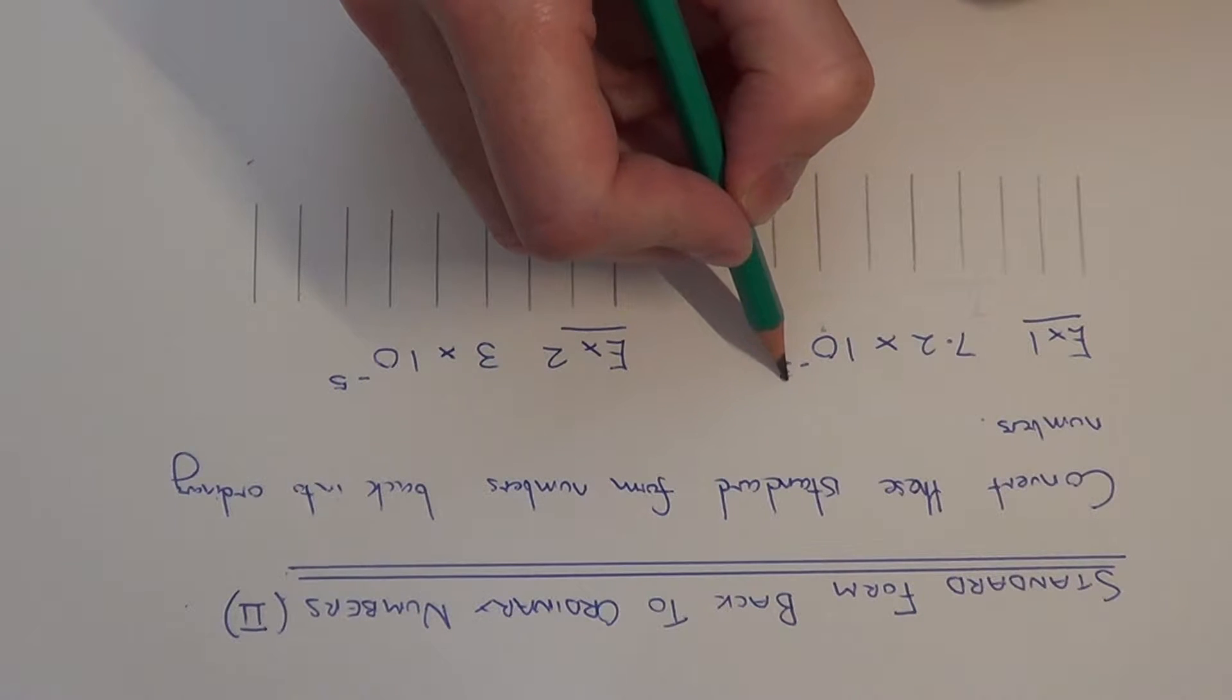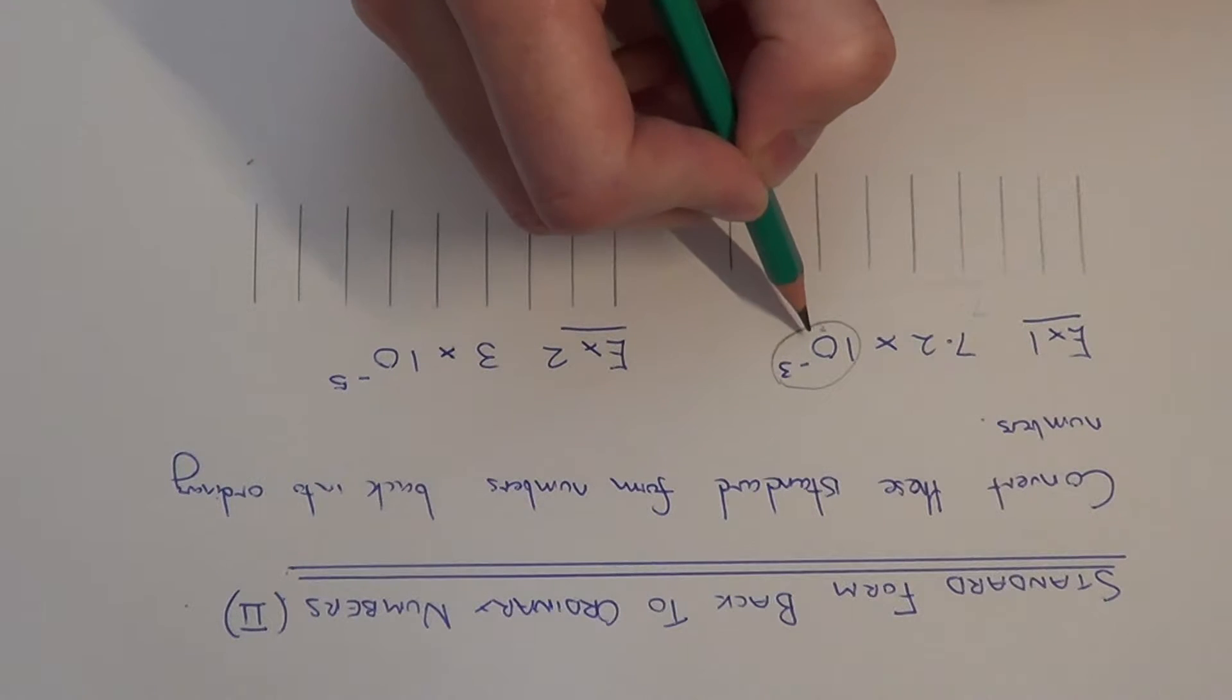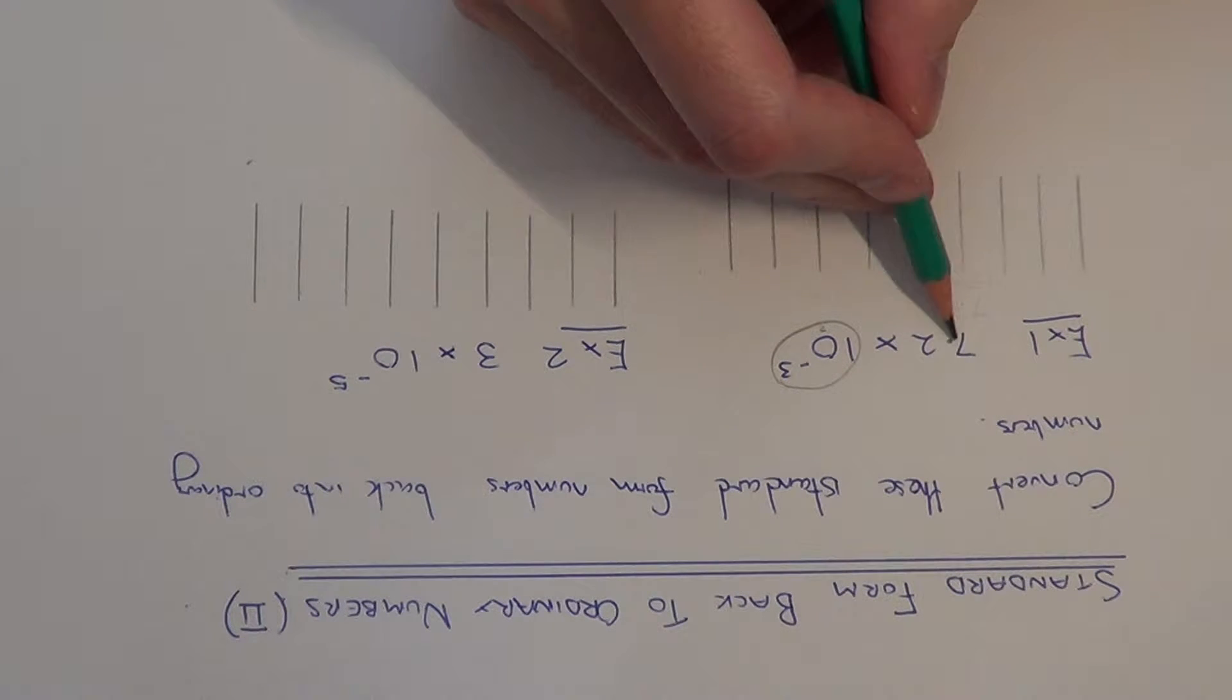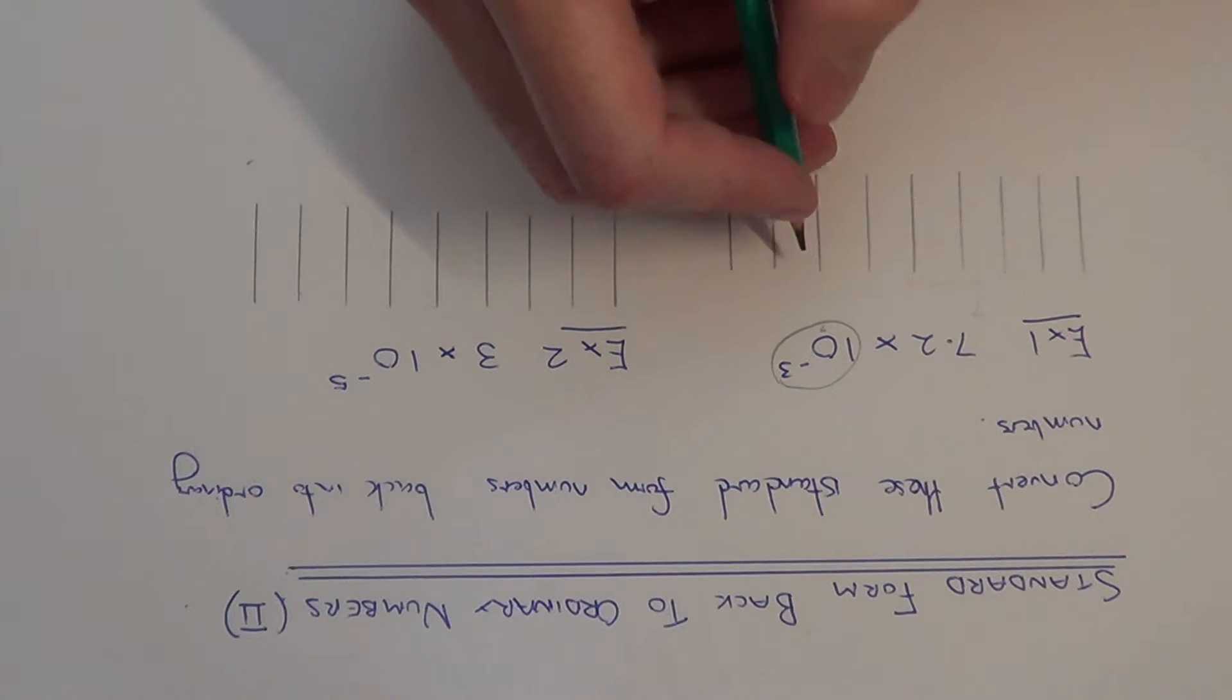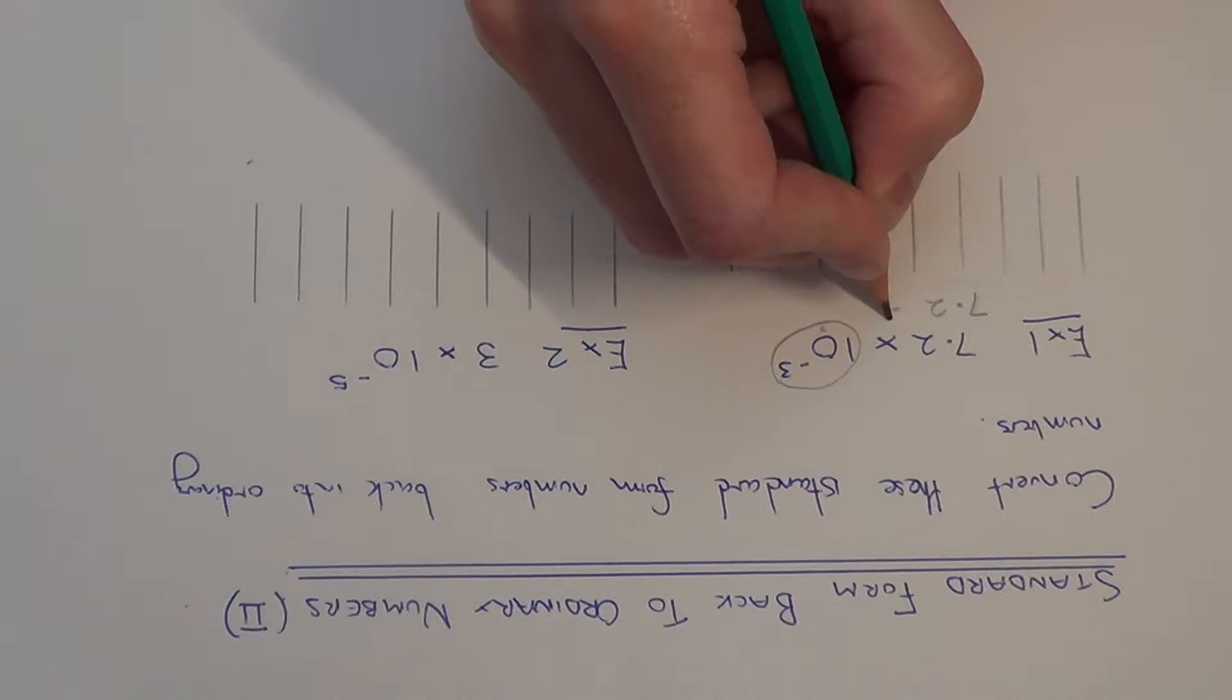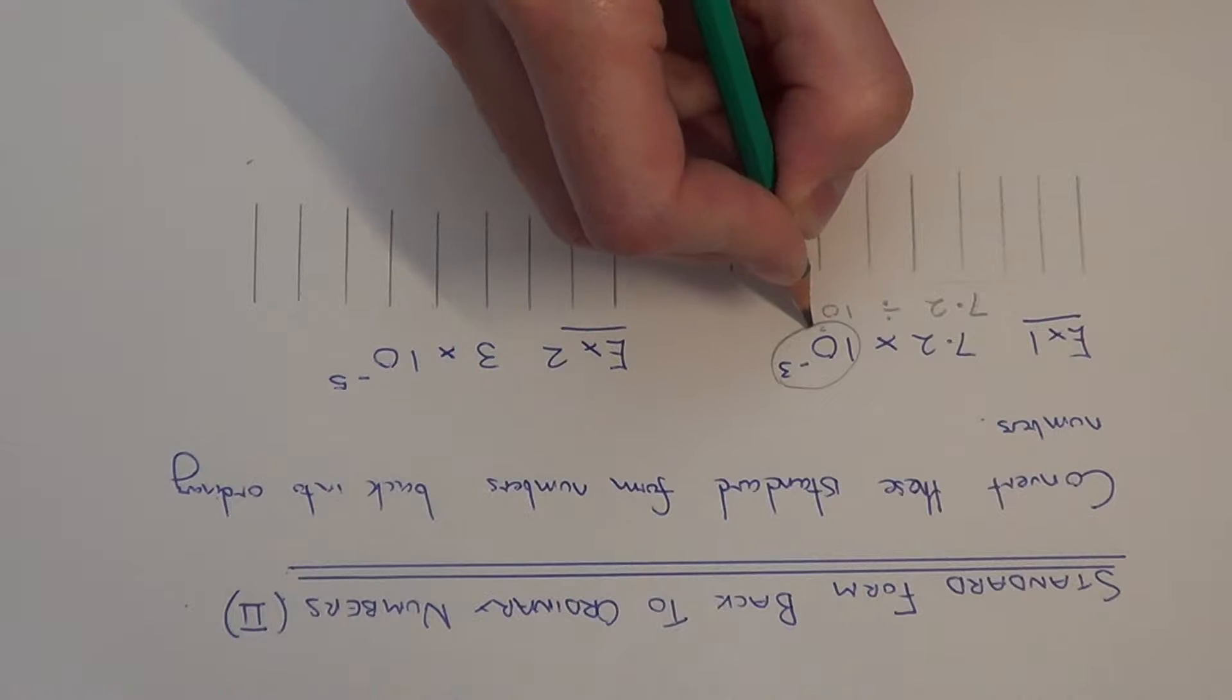So first of all we need to understand what the negative power actually means. 10 to the power of minus 3 actually means we need to divide the 7.2 by 10 and we need to do this 3 times. So we actually need to work out 7.2 divided by 10 to the power of 3.